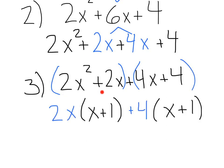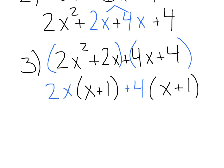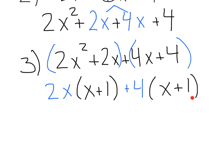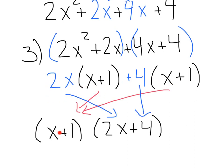Factor each group individually, that'll give us 2x times x plus 1, and plus 4 times x plus 1. And then we factor out the big group, which is going to give us x plus 1 times 2x plus 4. This is our factored answer.